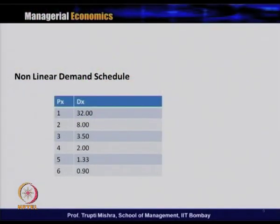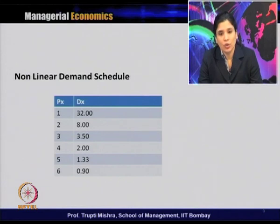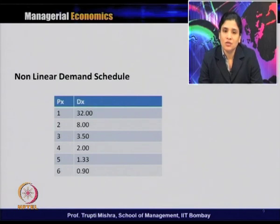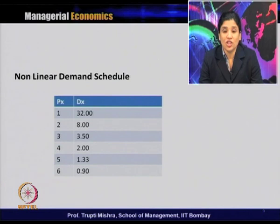This is an example of a non-linear demand schedule. When price is 1, quantity demanded is 32; when price is 2, quantity is 8; when price is 3, quantity is 3.5; and so on for 4, 5, and 6. The quantity demanded decreases as price increases, but the key point is that the change in quantity demanded is not constant with each change in price point — this is the typical feature of a non-linear demand curve.